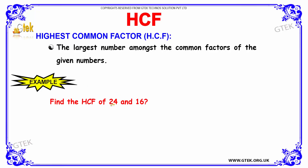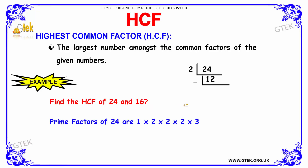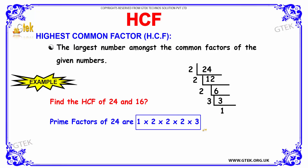We have to find the HCF of 24 and 16. We are going to do prime factorization by discovering the prime factors of 24 using the L method. 2 times 12 is 24; 2 times 6 makes 12; 2 times 3 gives 6; 3 times 1 gives 3. So the factors of 24 are 2 into 2 into 2 into 3 into 1 — these are the prime factors of 24.